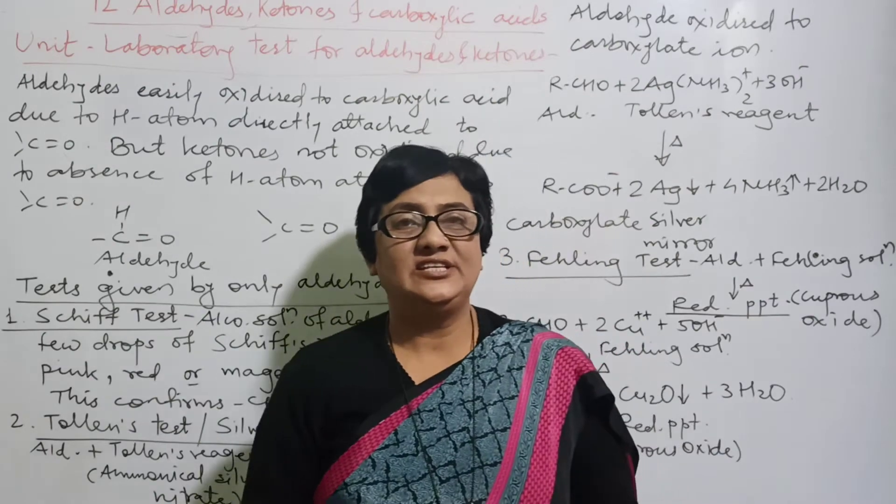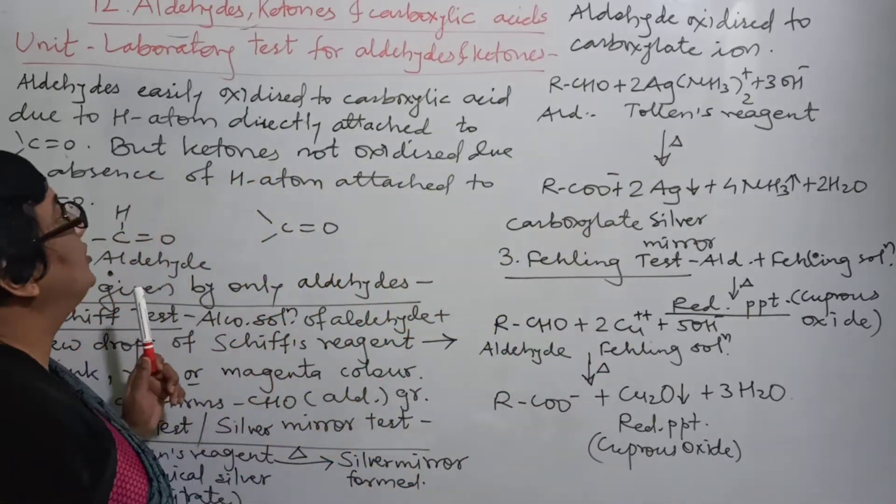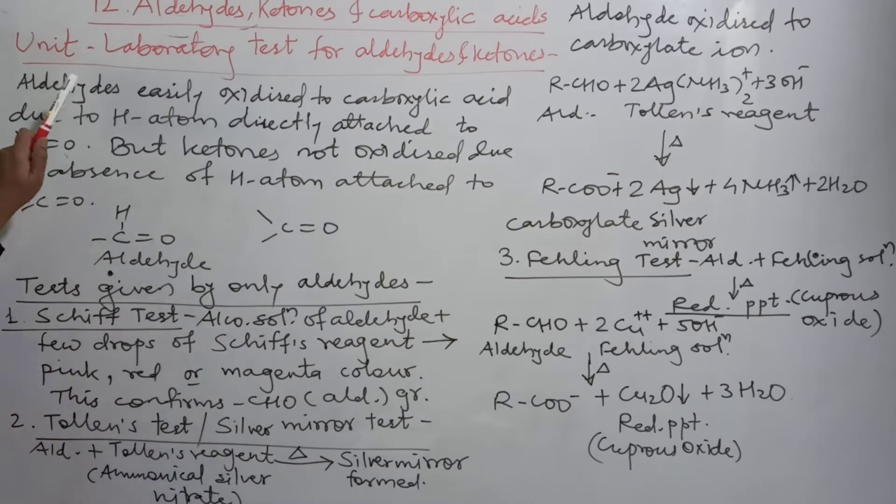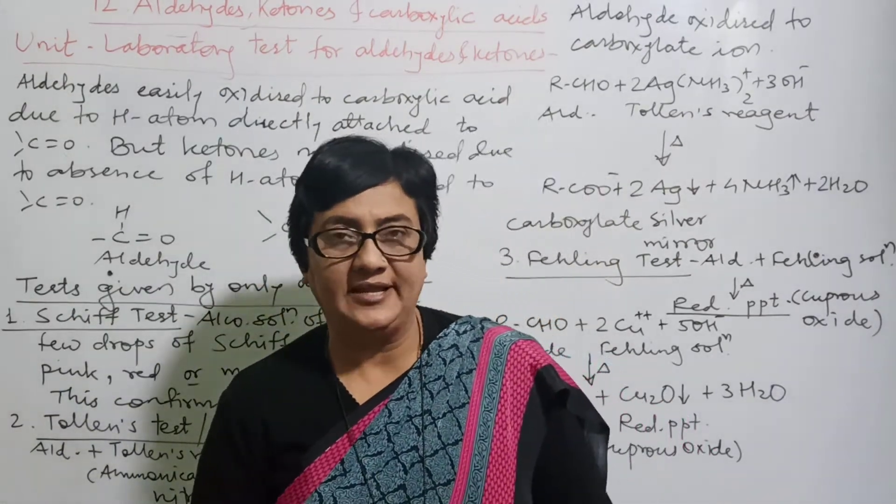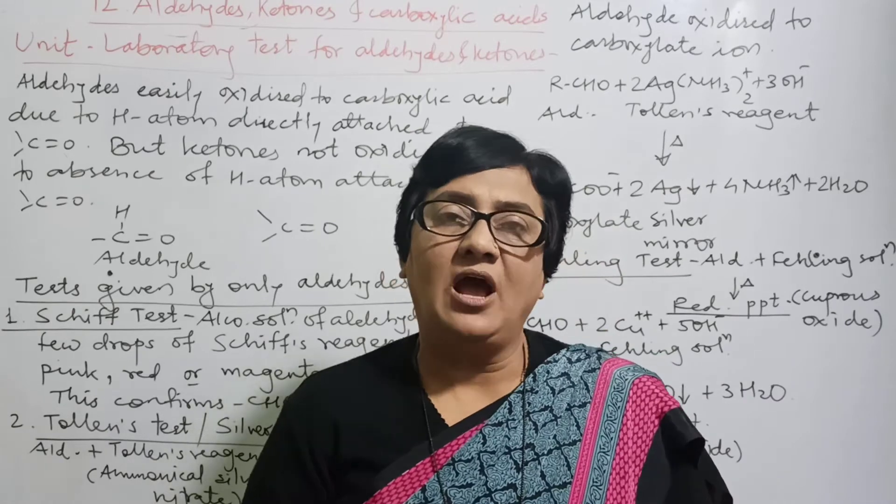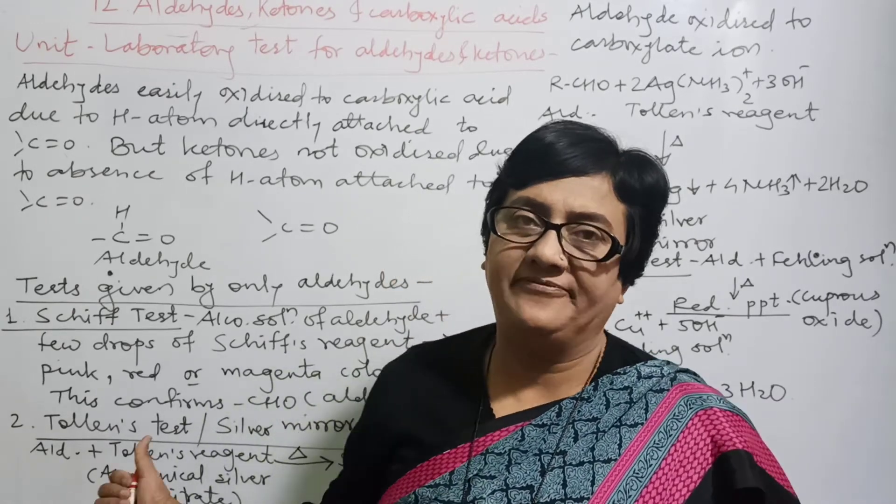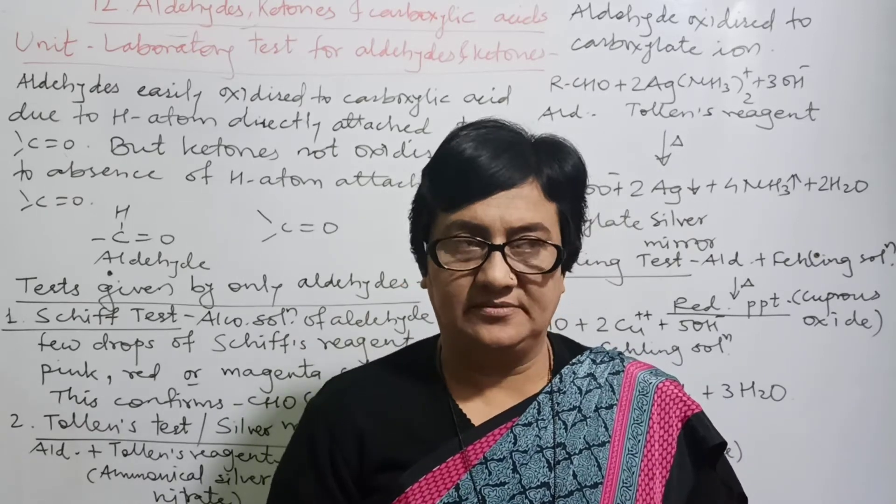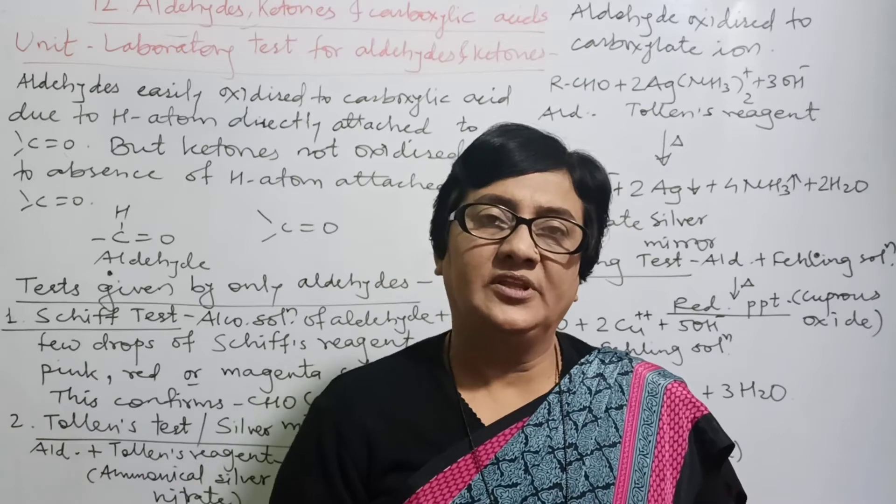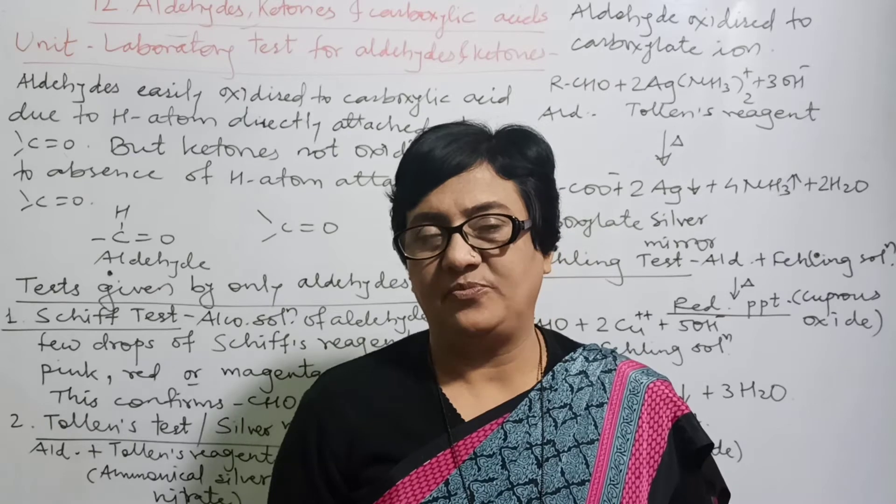Hello students, the next part of chapter number 12, aldehydes, ketones, and carboxylic acids, is the laboratory test for aldehydes and ketones. The aldehydes and ketones are carbonyl compounds, both having CO group. How can they be differentiated by color tests? Here, three different tests are given which have specific colors given by aldehydes only. Ketones do not give such types of colors.